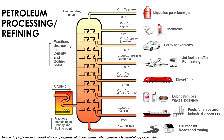At the lowest temperature, we have LPG or liquefied petroleum gas, which we all use in our houses to cook. As the temperature increases, we have gasoline, petrol, diesel, and even the tar that we use for laying our roads — that also comes from petroleum.